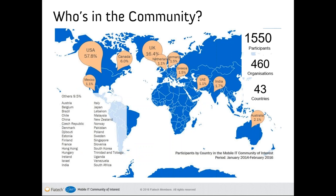So who's in the community? The community of interest is over two years old. Throughout the previous months, we've had more than 1,550 participants from over 460 organizations located in 43 countries. Participants are mainly located in North America and Europe, but as we continue to expand in the Middle and Far East, we're beginning to attract participation from South America and elsewhere. We're very pleased with the industry's response so far.